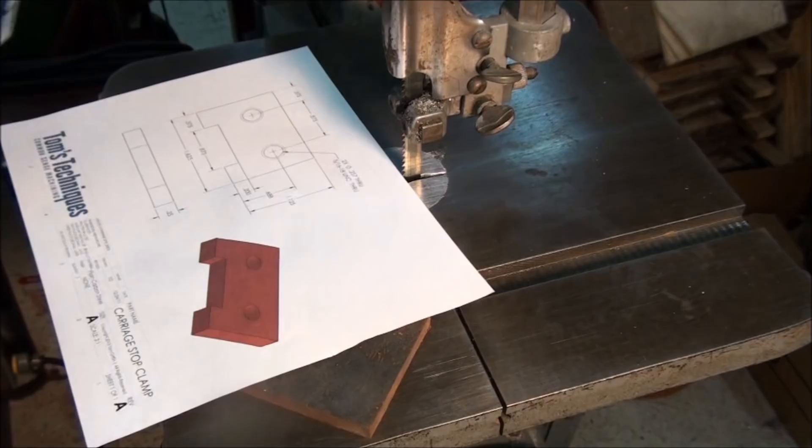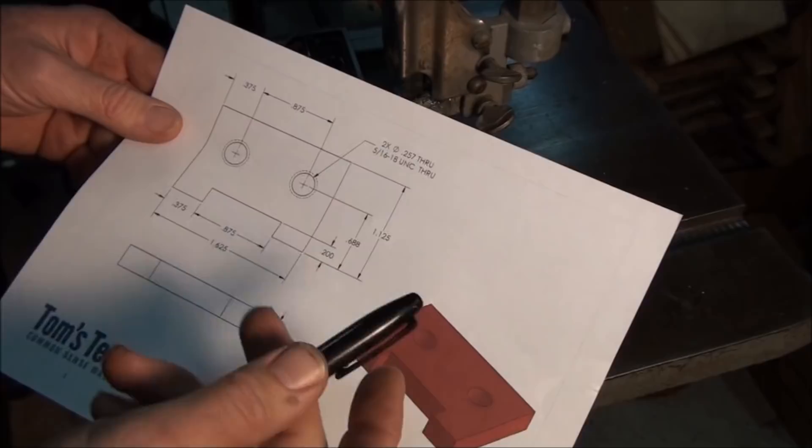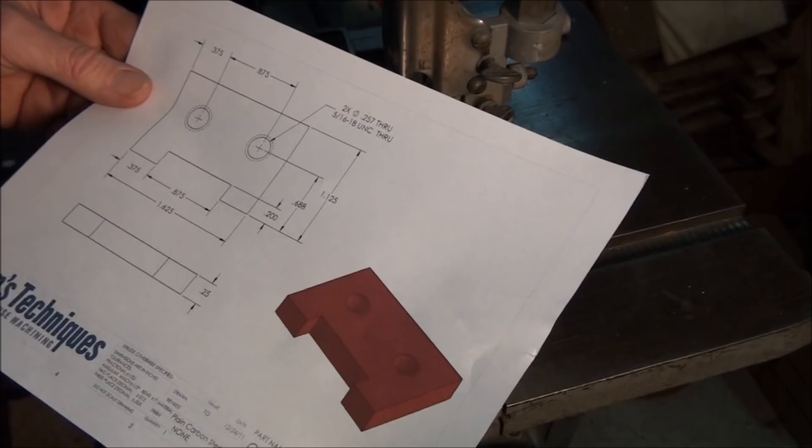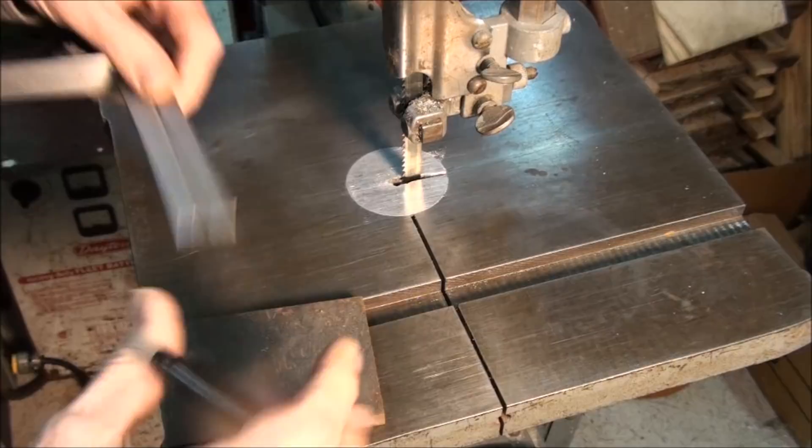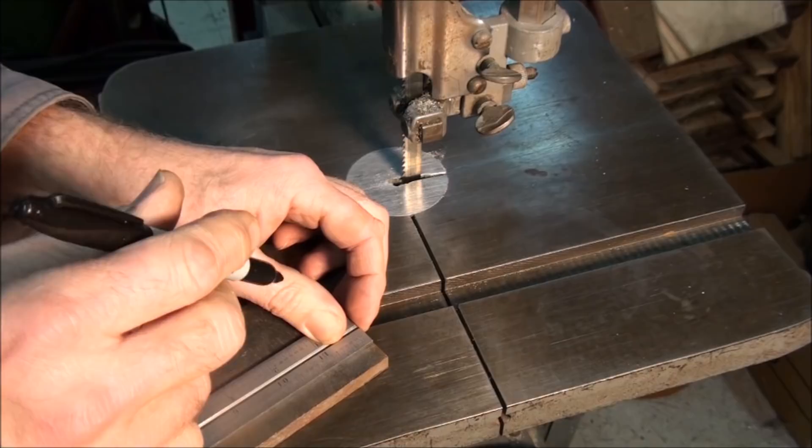So we need a finished part 1-5-8ths long by 1-1-8ths wide and a quarter inch thick. So let's cut out a piece about 1-16ths wider in each dimension, 1-11-16ths by 1-3-16ths. Nothing magic about that, 1-3-16ths by 1-11-16ths.